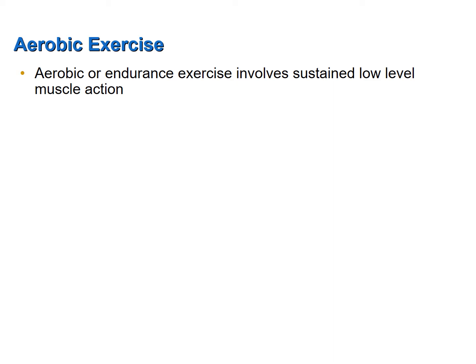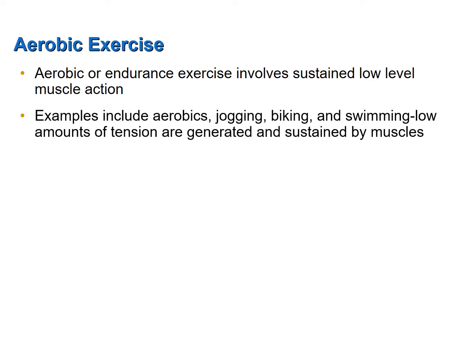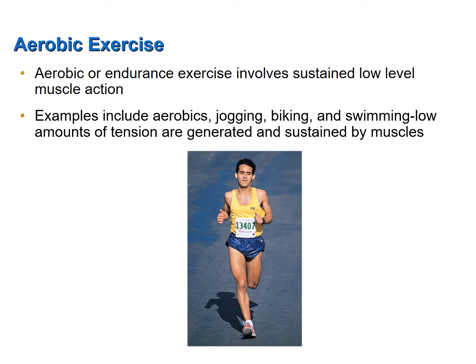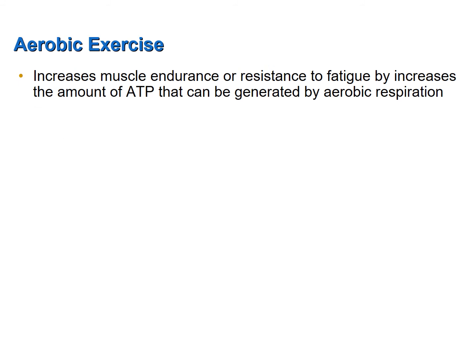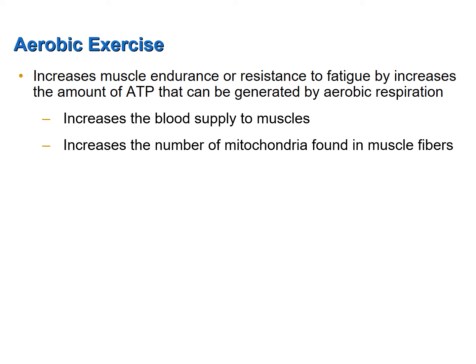Aerobic or endurance exercise involves sustained low-level muscle action. Examples include aerobics, jogging, biking, and swimming. In all of these activities, low amounts of tension are generated and sustained by muscles. Because muscle activity is prolonged, most of the ATP is generated by aerobic respiration. When aerobic exercise pushes the limit of how much ATP can be supplied to skeletal muscle fibers by aerobic respiration, the result is an increase in muscle endurance and resistance to fatigue. One of the changes that occurs is increased blood supply to muscles.